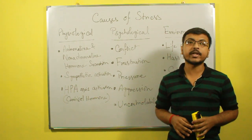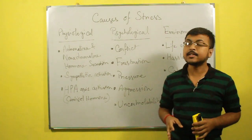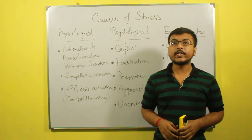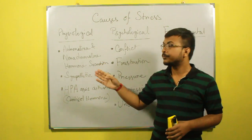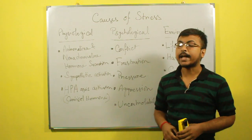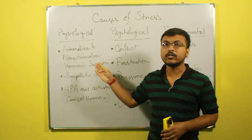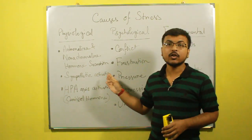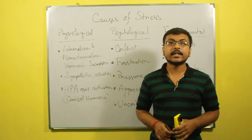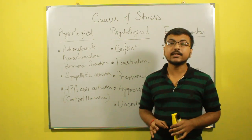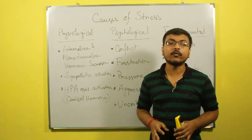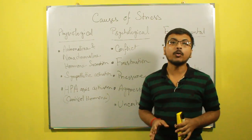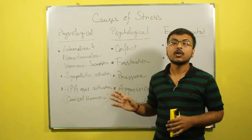Now we will discuss about the causes of stress. We classify the causes of stress into three sections: physiological, psychological, and environmental. Under the physiological causes of stress, there are three points: secretion of adrenaline and noradrenaline hormone from the adrenal medulla; sympathetic activation of the autonomic nervous system; and HPA axis activation, which is a combination of the nervous system and endocrine system. The main hormone responsible for this is cortisol.